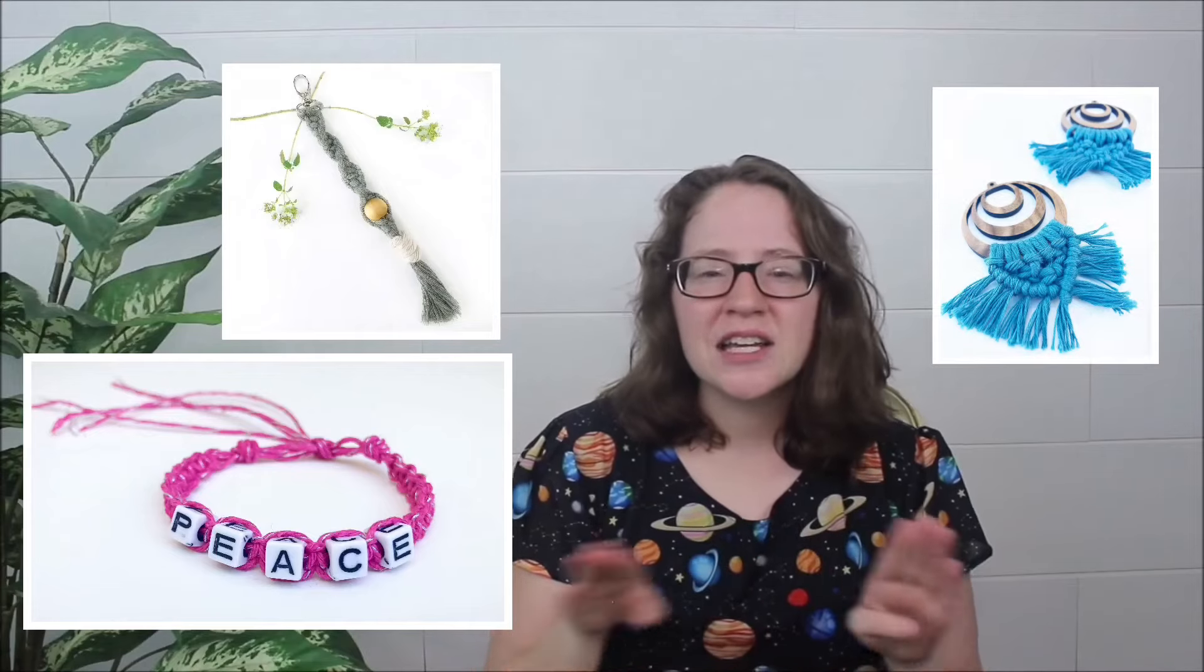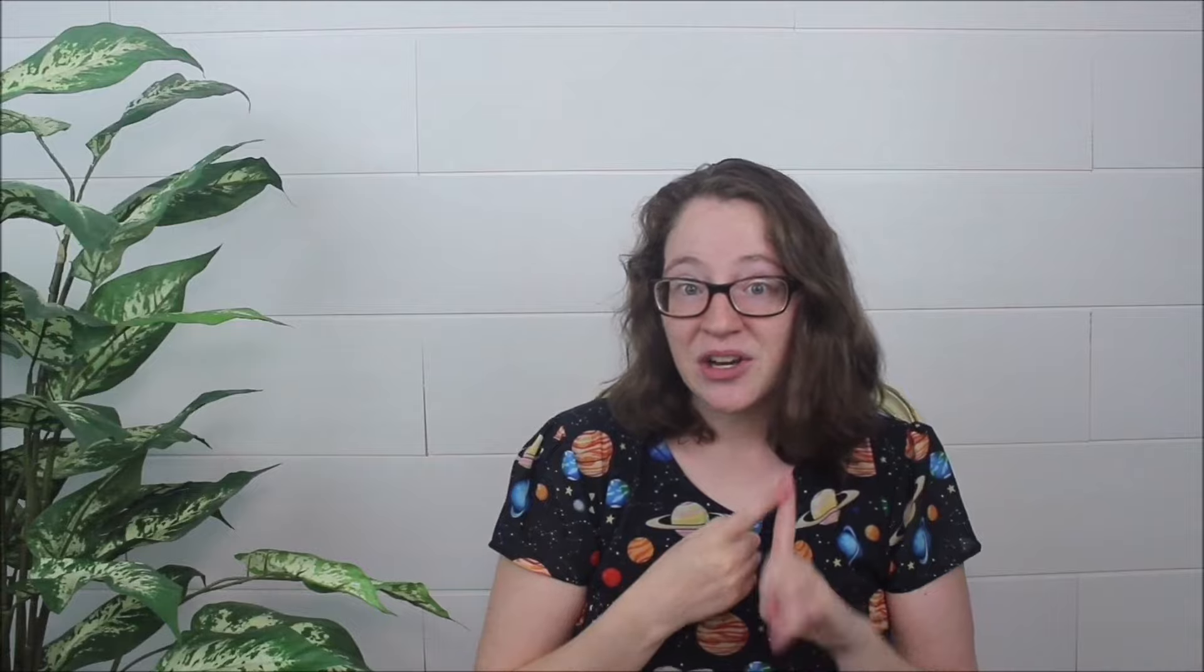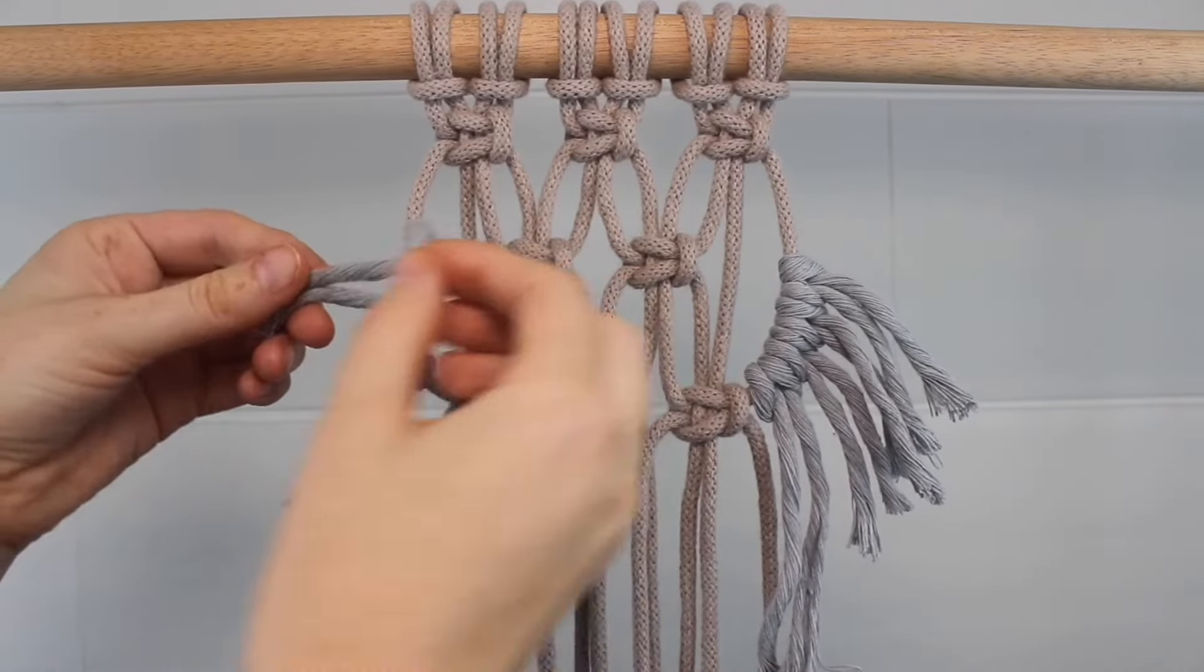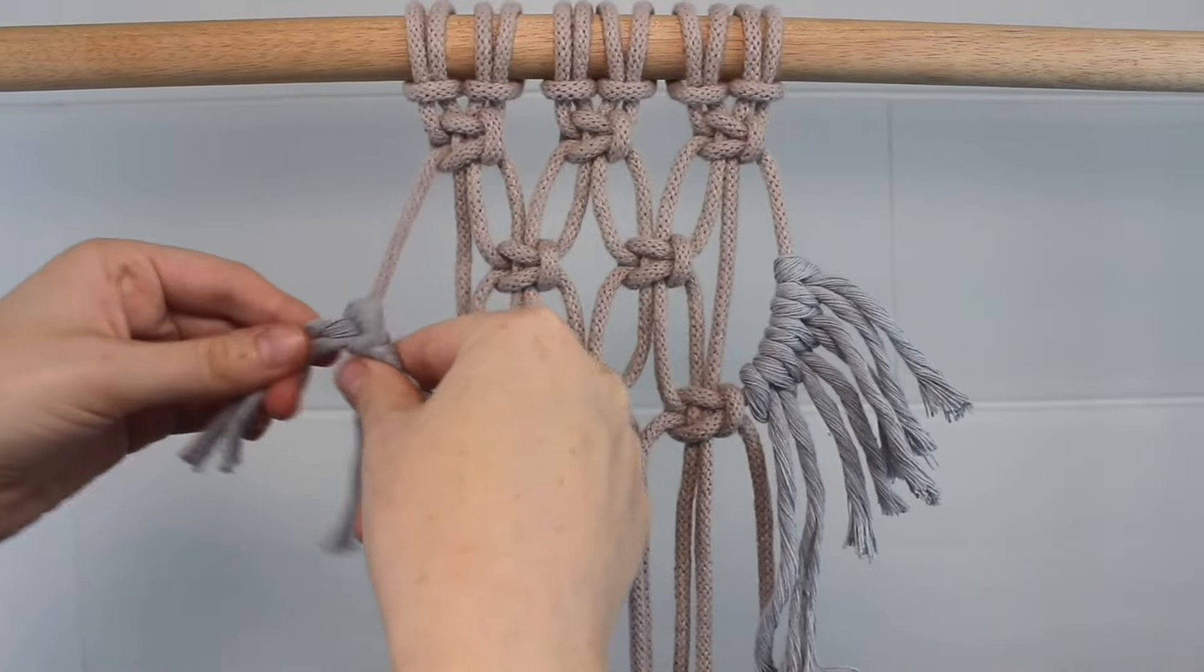If they're long enough, you can make key chains, bracelets, and earrings and any of those fun smaller projects. If they're not quite long enough to make full projects, you can use those scraps to add fringe to your wall hanging. All you have to do is attach it with a larks head knot and you have beautiful fringe. You can also use it to make tassels and feathers and other projects like that. So please don't feel like you're wasting all your rope, because you can always use it again.